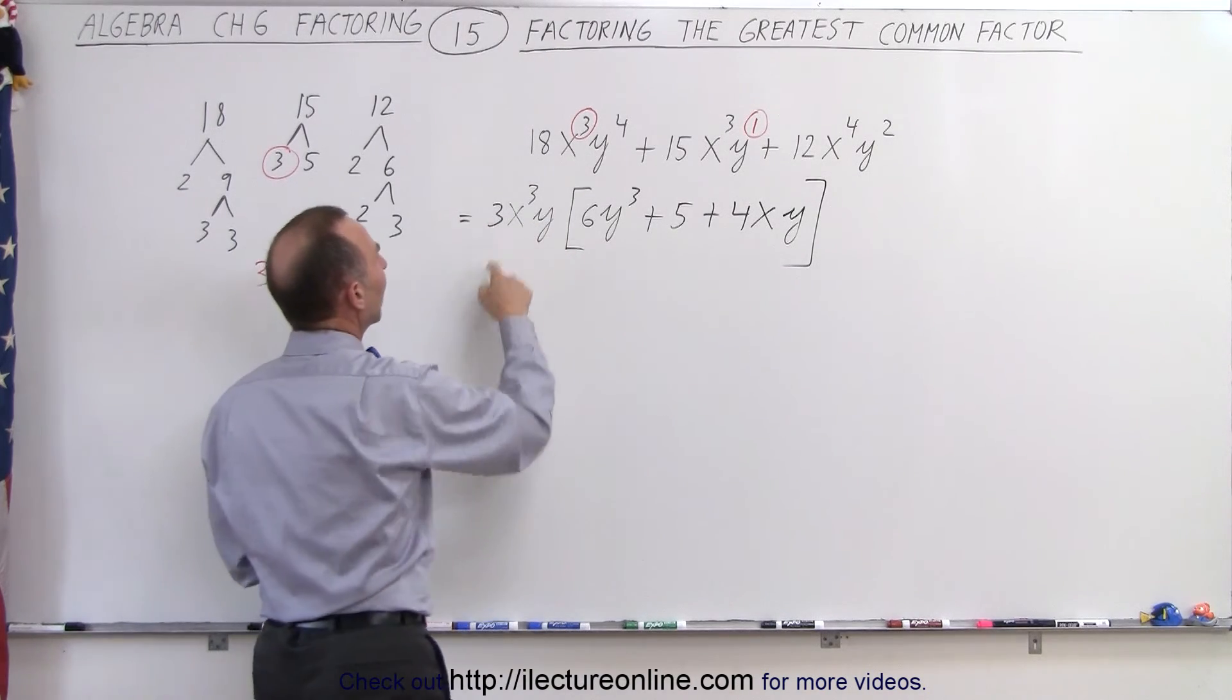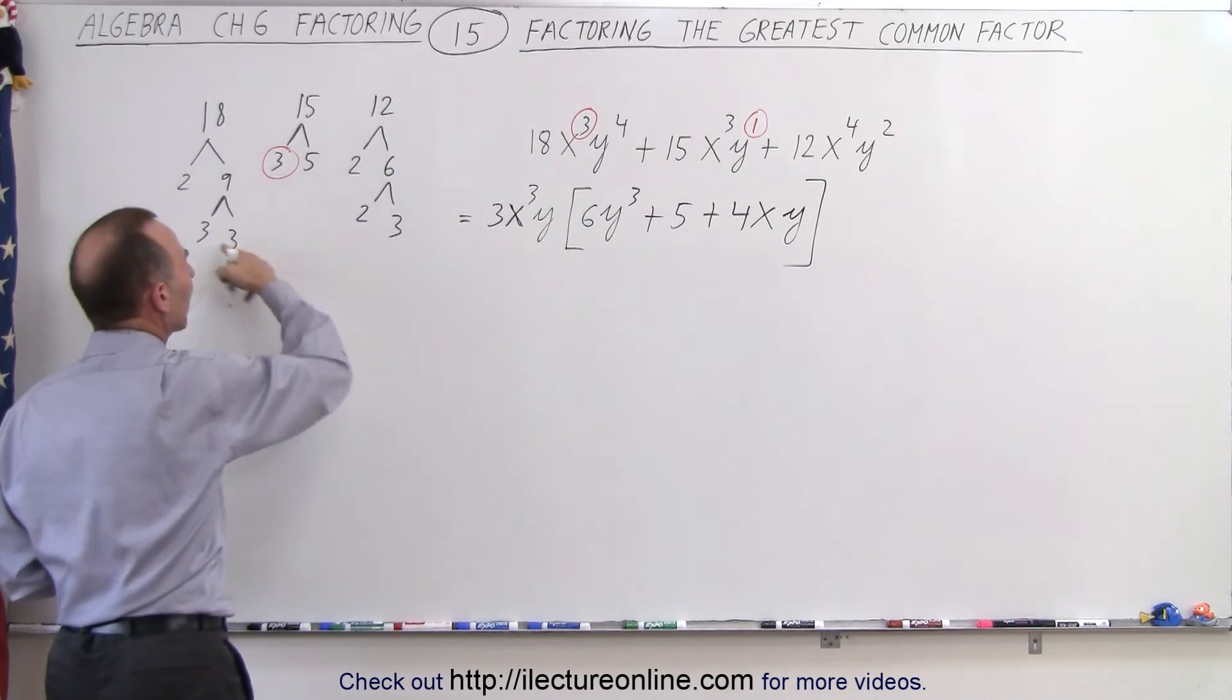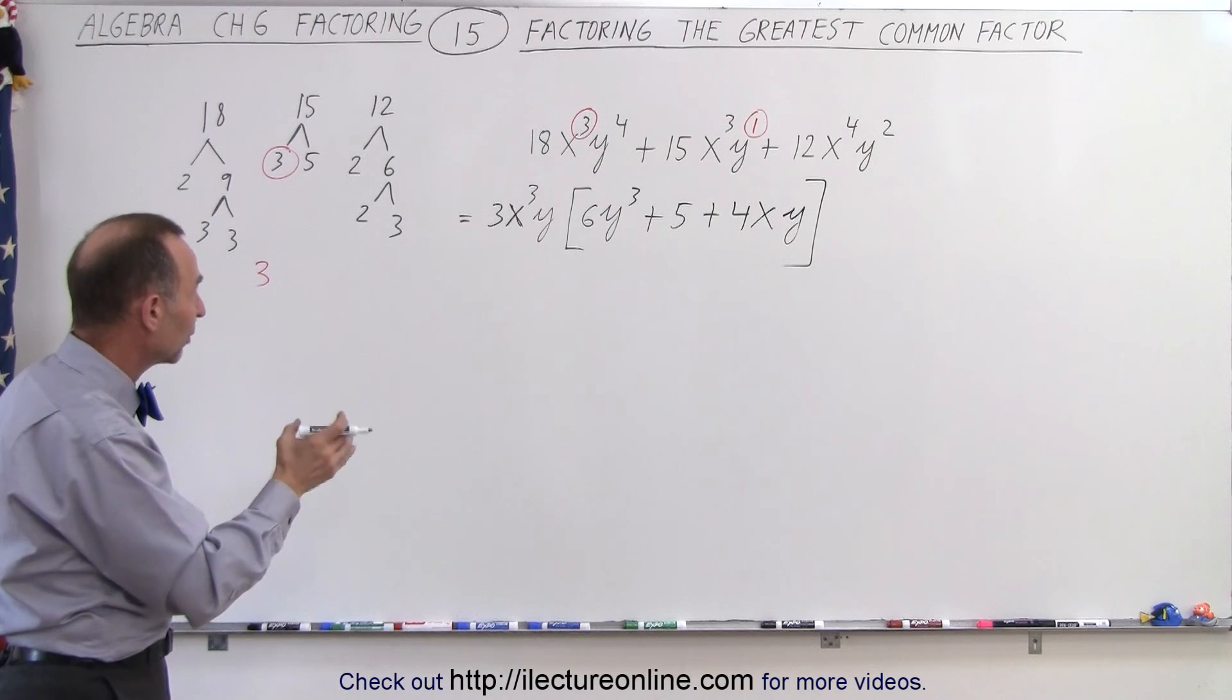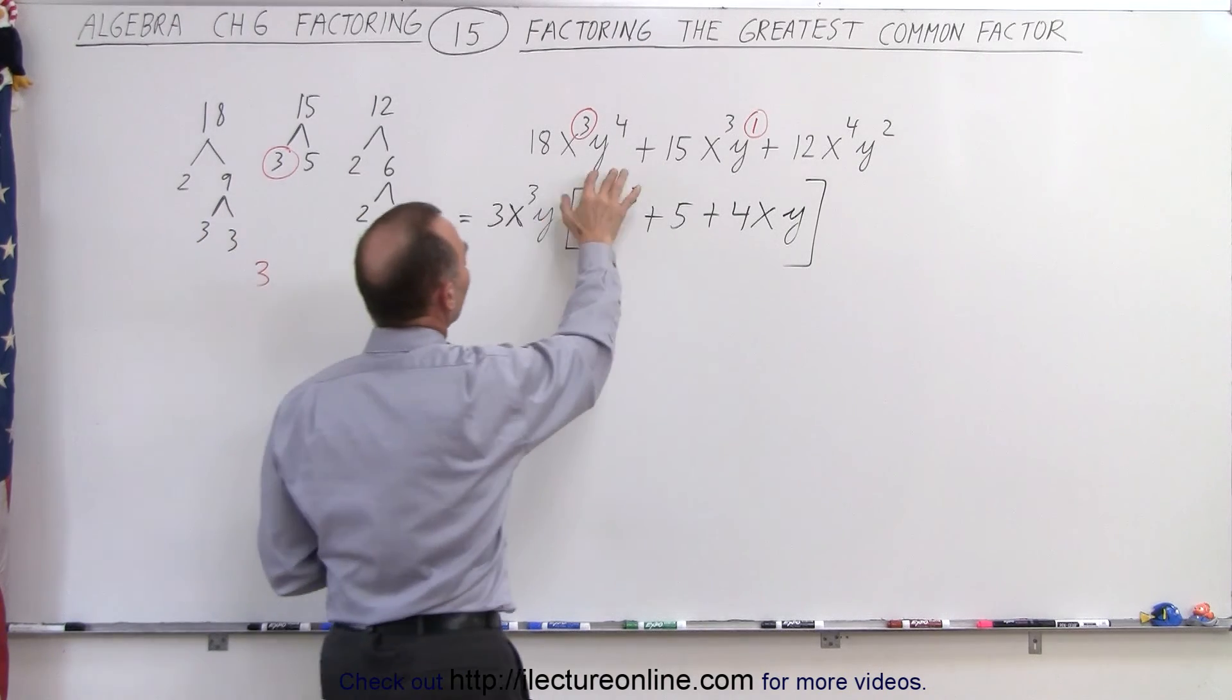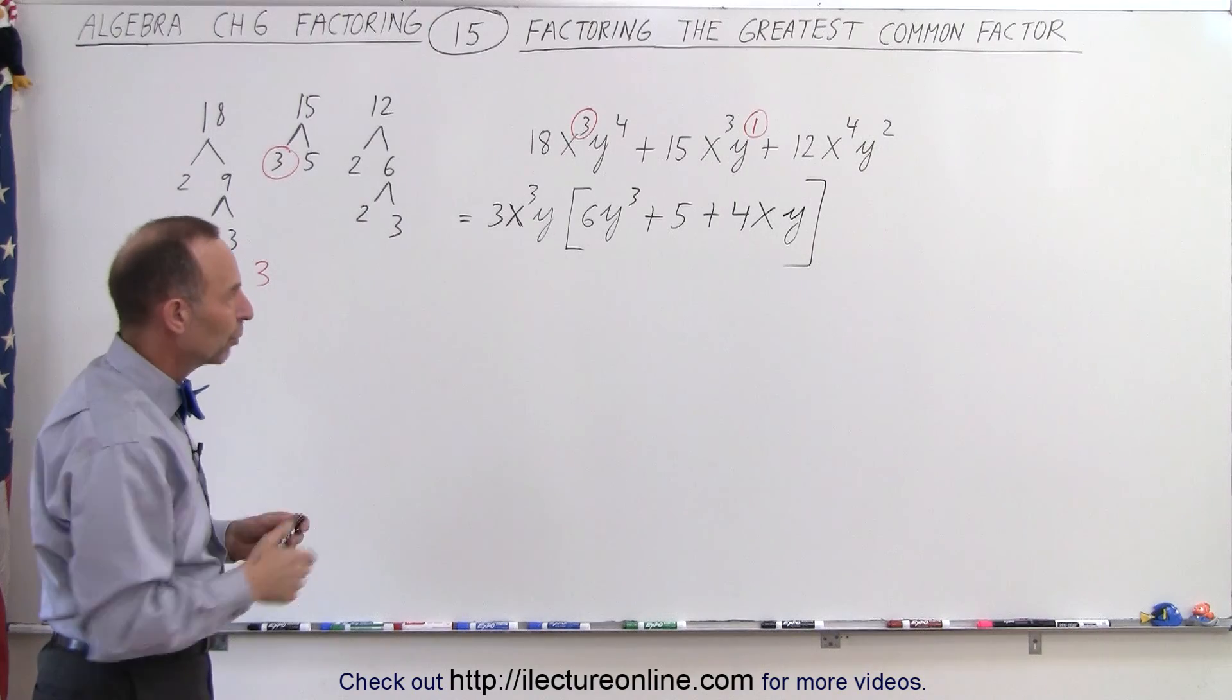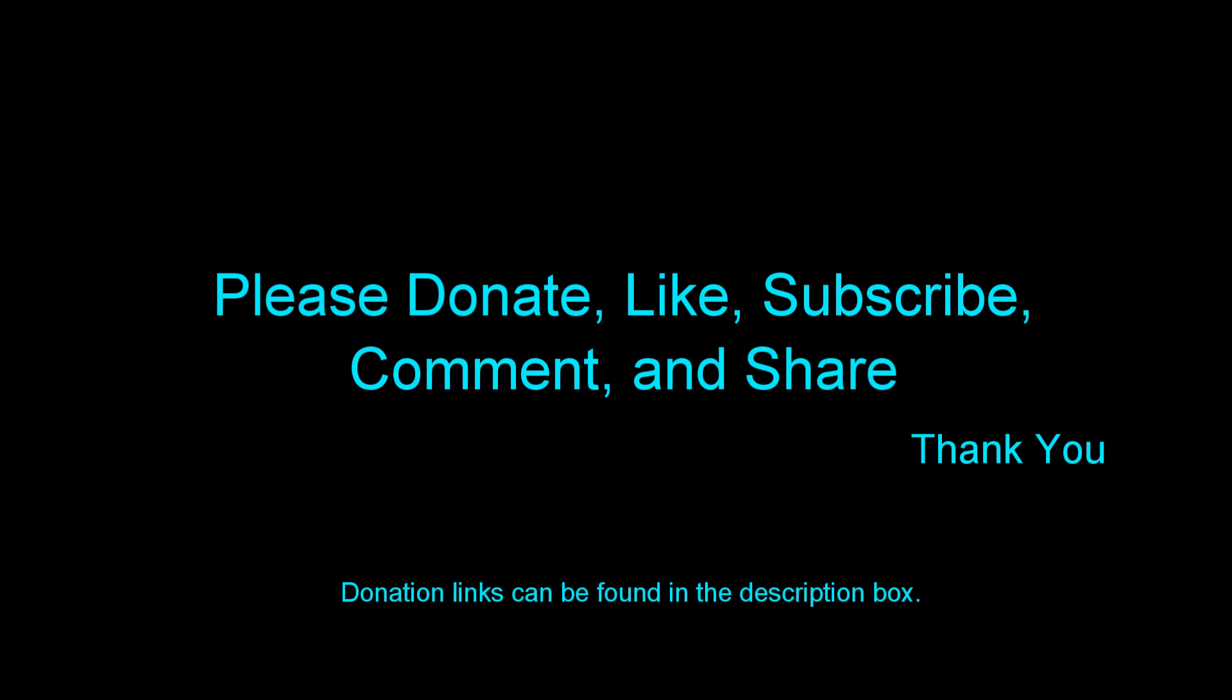So we can see that 3x cubed y is the greatest common factor. Numerically, we can find it by looking at all the factors and only picking those that are common to all three, and only where they appear the fewest number of times. And for the variables, we look at all the exponents and we factor out the variable with the smallest exponent of all the terms that are there. And that is how it's done. Thank you.